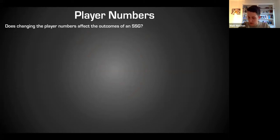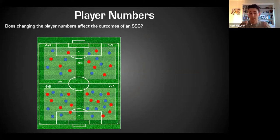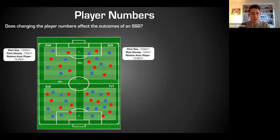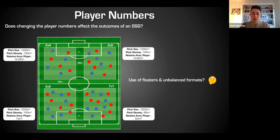Moving to player numbers: using the same pitch size, as you increase the number of players, space decreases significantly. A 4v4 in a given area feels normal, but adding more players makes it smaller and smaller, increasing pressure and reducing the quality and speed of play. A 7v7 in that same space can be as congested as a 2v2 relative area, so you won't get the same benefits.